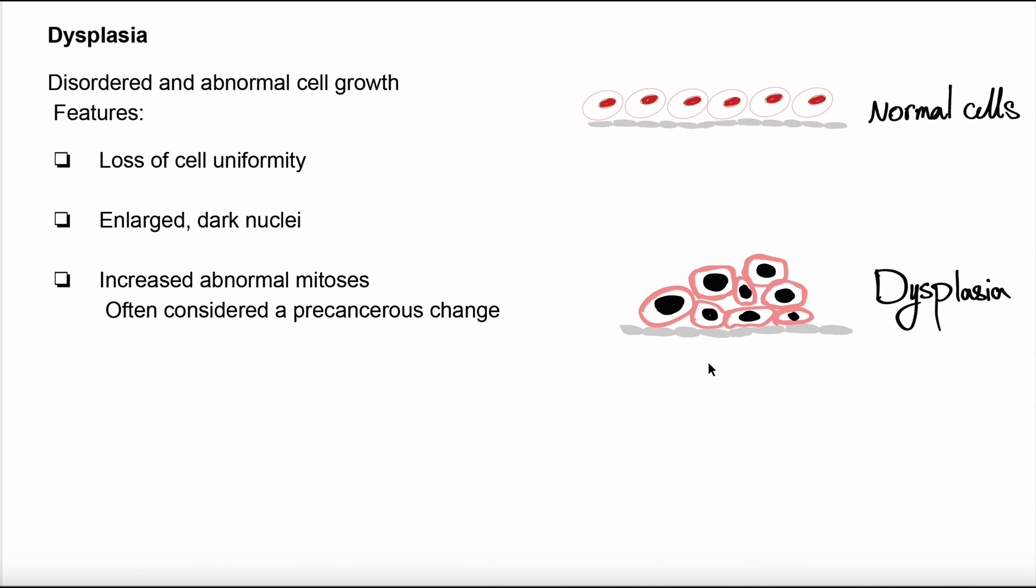If I want to bring an example for dysplasia, I can say cervical dysplasia, which is related to HPV and can be detected by Pap smear. Or another one can be bronchial dysplasia, which is a precursor to squamous cell carcinoma.